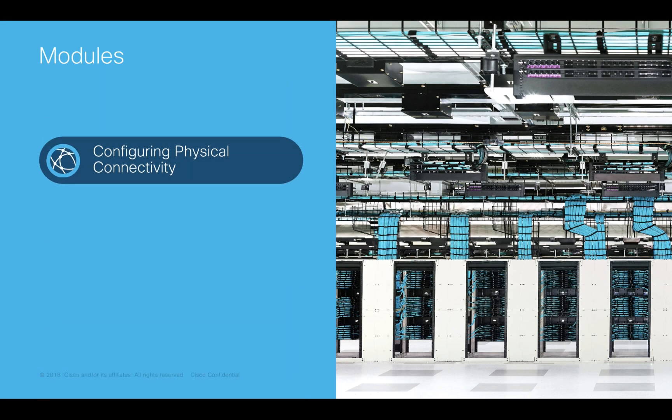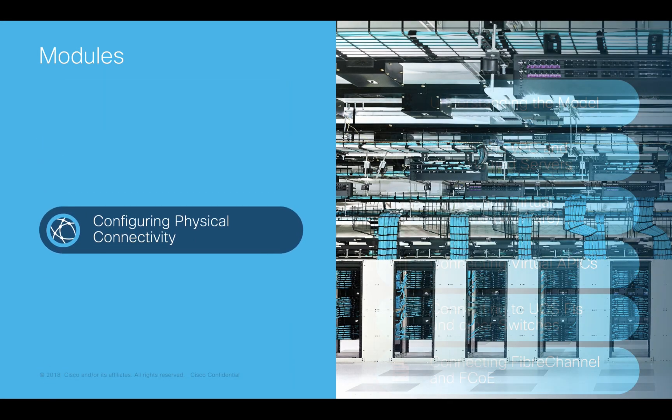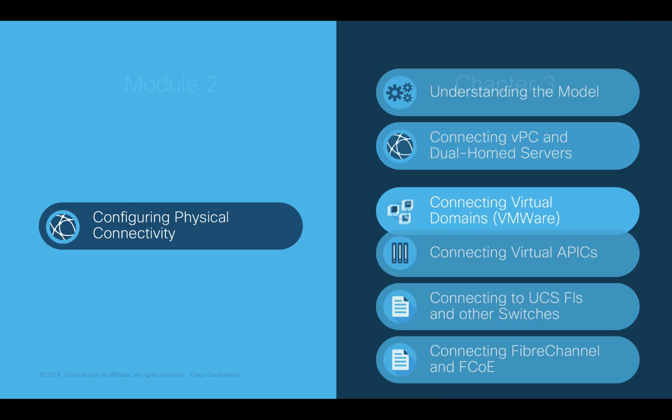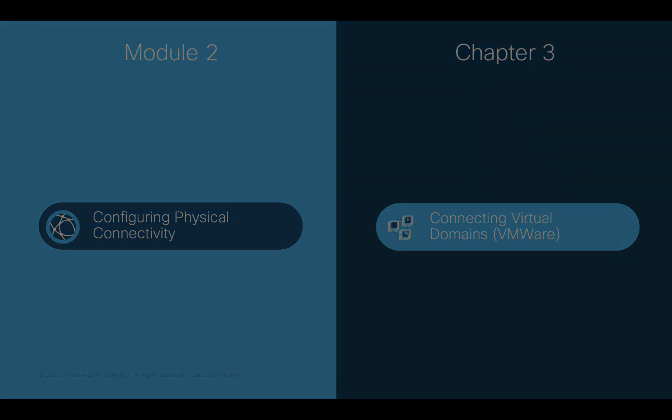Welcome to ACI, the Network Made Simple learning series. In this video, we will cover Module 2, Configuring Physical Connectivity, Chapter 3, Connecting VMware Virtual Domains.